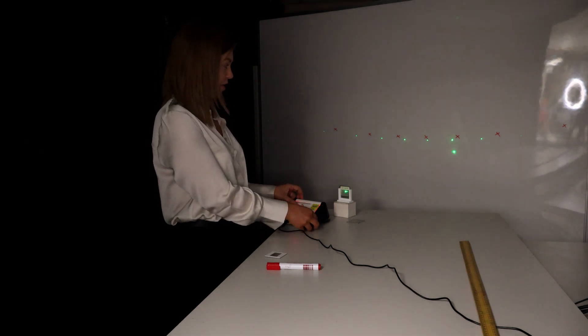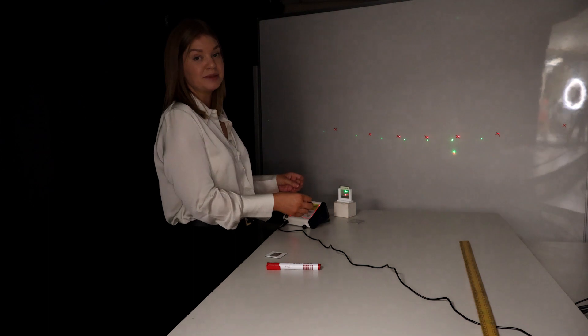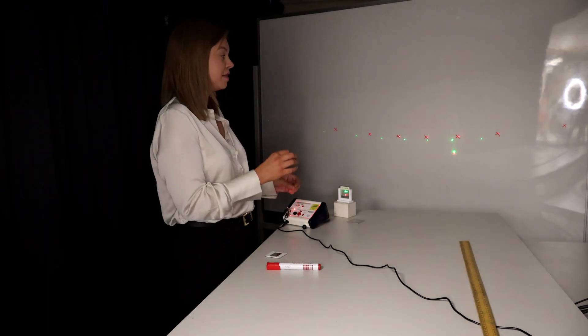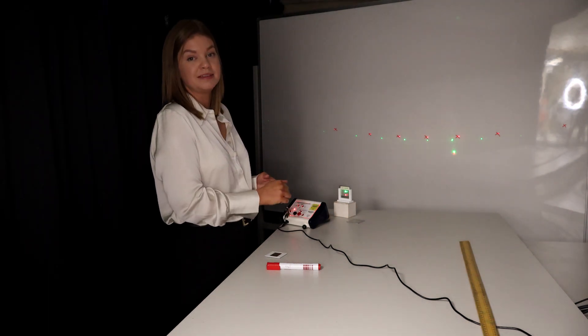We also have the advantage of shining both red and green light through the grating at the same time, so we can see how the wavelength affects the spacing of the diffraction pattern.